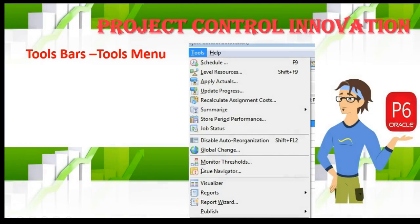The Tools menu helps you manage schedules — calculating early and finish dates. You can do this by pressing F9 or go to the toolbar to Schedule. You'll also find Level Resources if you'd like to level your resources, and Apply Actuals to update progress — or you can do it manually, which I prefer. Other functions like Store Period Performance and all kinds of reports will be explained when we open the software.